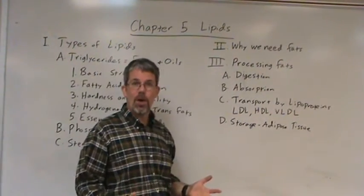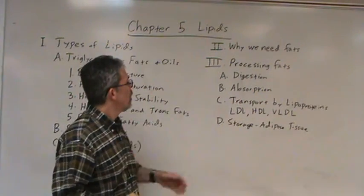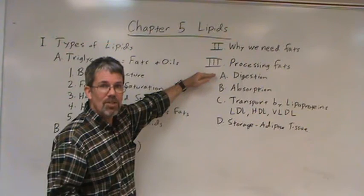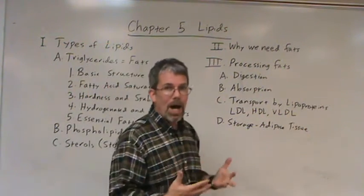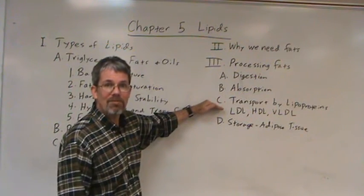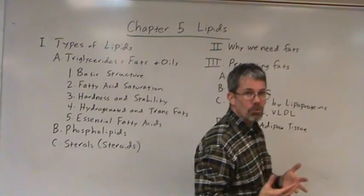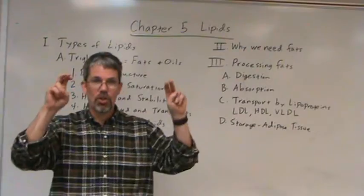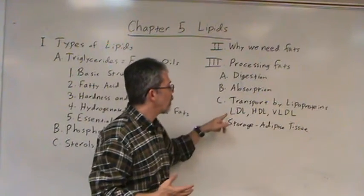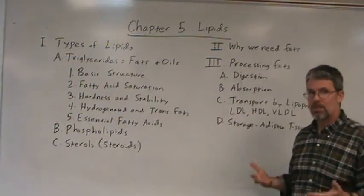Why do we need fats? First and foremost, energy: one gram of fat yields nine kilocalories of energy for energy metabolism. What do we do with them? We digest them. Remember what was said in the digestive system chapter concerning the use of the liver, bile, emulsification, lipase enzymes, and so forth. We absorb them, but because they don't mix well with water, they have to be transported by lipoproteins. LDL — low-density lipoproteins — transport cholesterol and are considered the bad cholesterol. HDL — high-density lipoproteins — is considered the good cholesterol. VLDLs transport triglycerides in the blood. There are normal and abnormal amounts to them when somebody gets a lipid blood test.